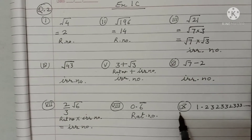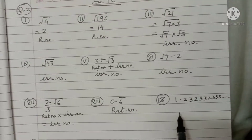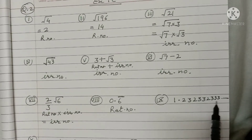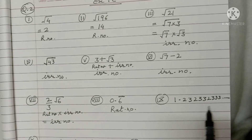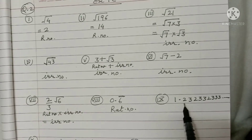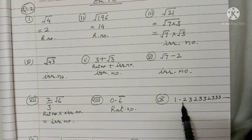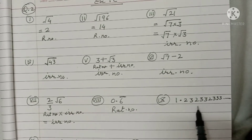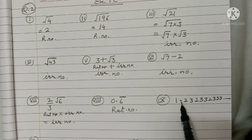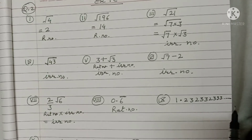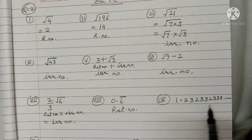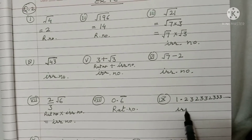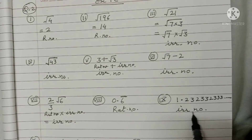Part nine: 1.23232323233... and so on. Here the digits are not repeating in groups — it is continuing with digits that are not repeating. So this is an irrational number.